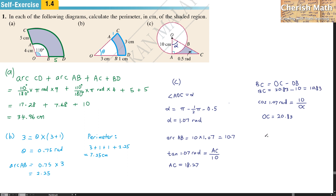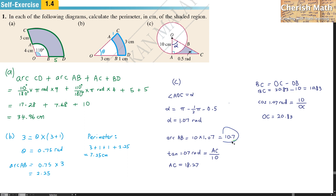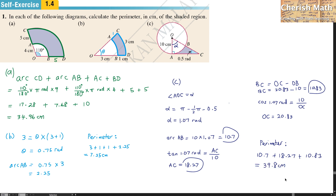For the perimeter of the shaded region in part C, I add arc AB (10.7), AC (18.27), and BC (10.83). The total perimeter is 39.8 CM.